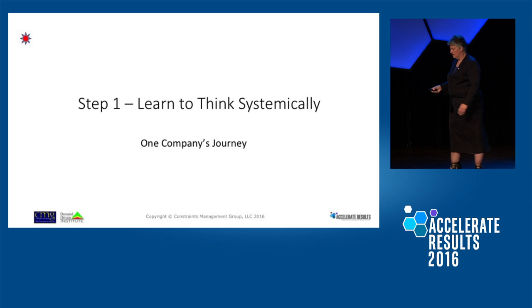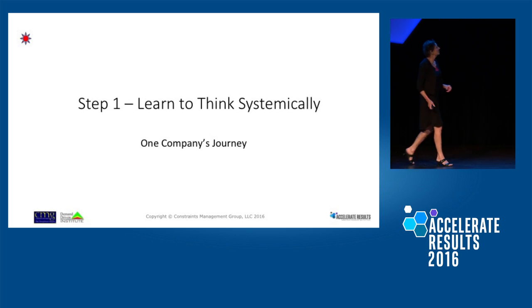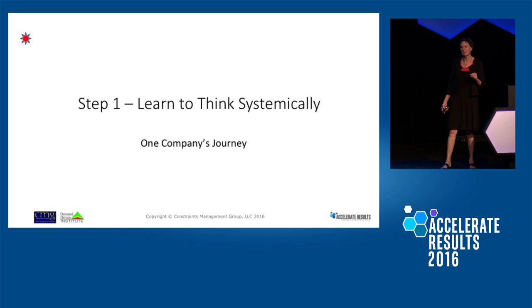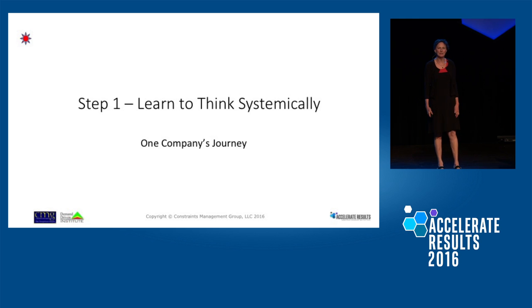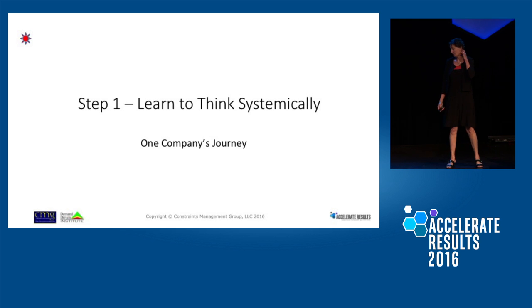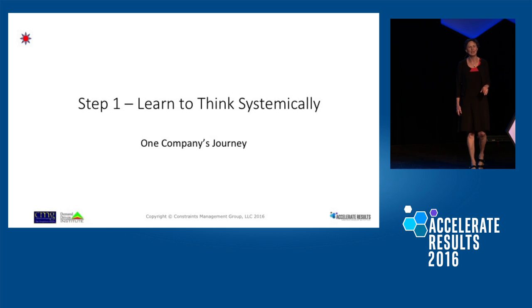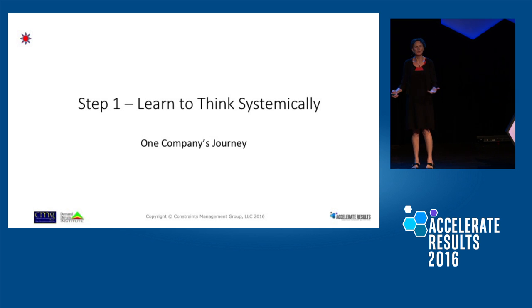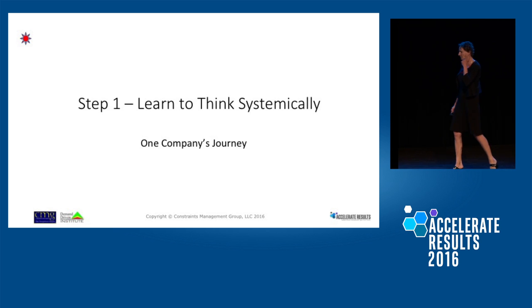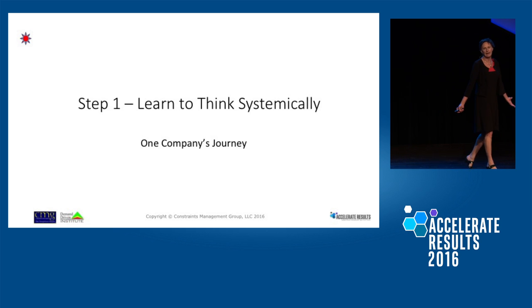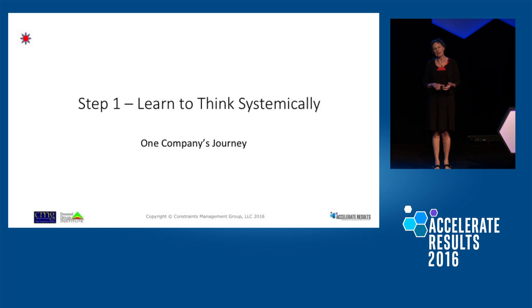Learning to think systemically — and I'm going to turn it back over to Deb. There's a reason my email is dsmith at thoughtwarepeople.com. When we started Constraints Management Group in '97, I have a brilliant child who forced me to start that company — he's the marketing genius who said 'we're thoughtware people.' Thoughtware is where it starts. Because if you don't have the right thinking, you can't possibly know how to act. Thoughtware comes before software. Thoughtware is about thinking and getting the organization to think systemically. That's where we always start.